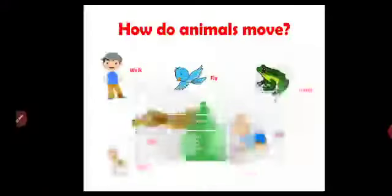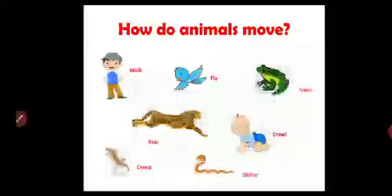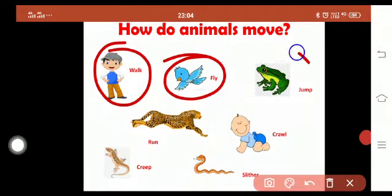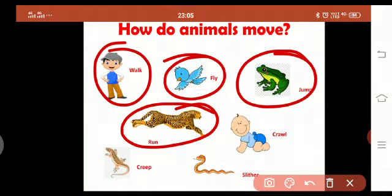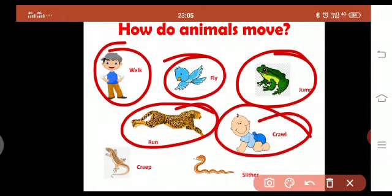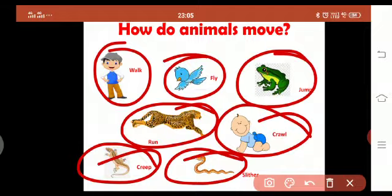How do animals move? We human beings walk. Birds fly, frogs jump from one place to another. Your lion, tiger, cheetah, giraffe, and elephant - obviously your giraffe and elephant won't run, but these animals run. Your elephant or giraffe, if they want to change their position, they just walk. A small baby will crawl. Your lizards that you see in your house just creep on the wall. Snakes don't creep, they slither on the ground. These are the ways animals move from one place to another.